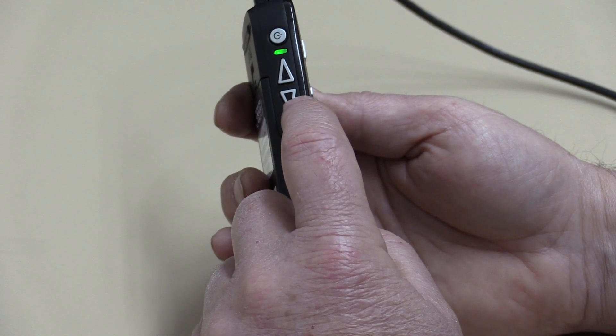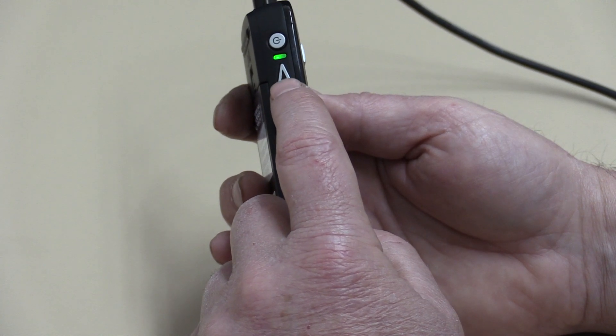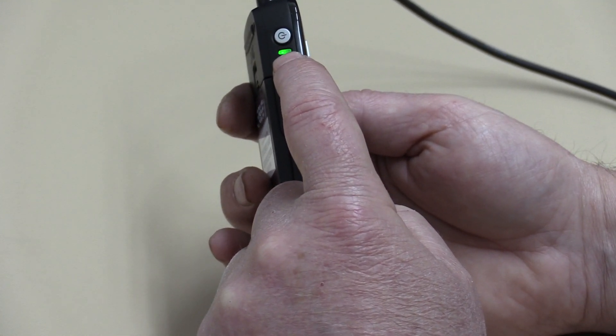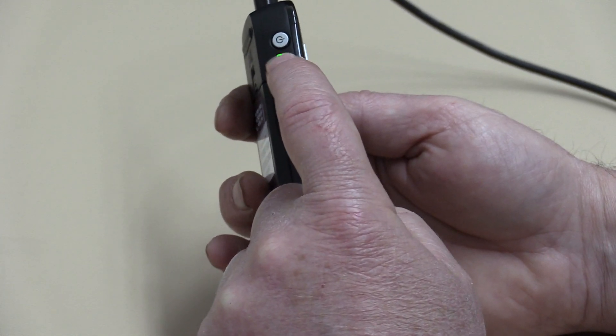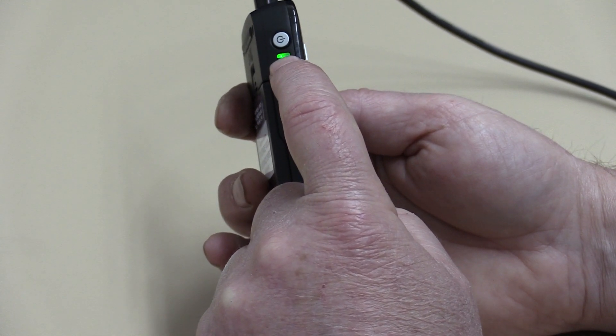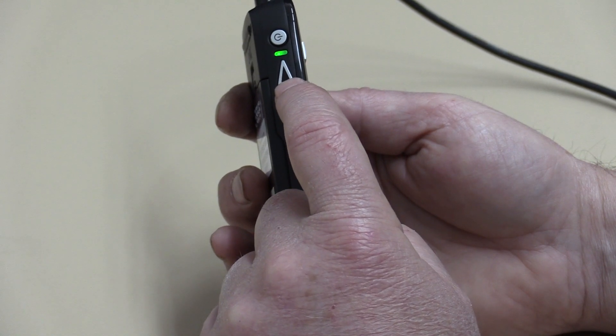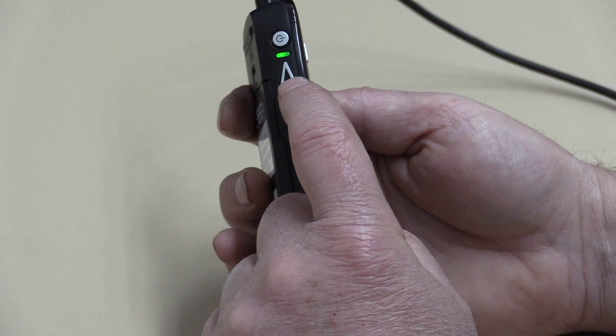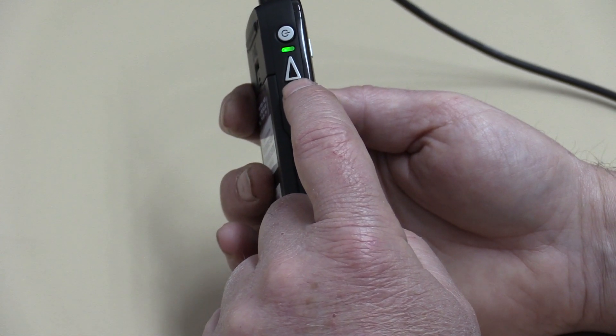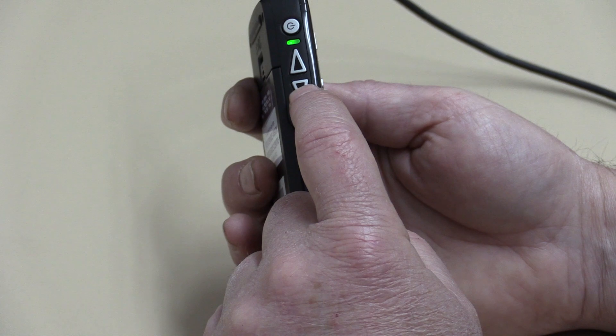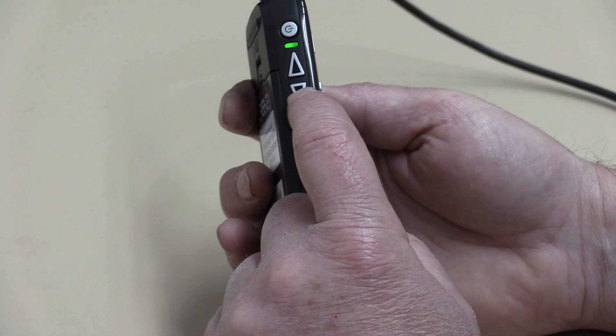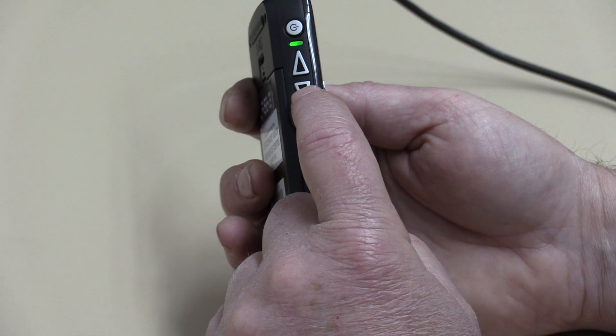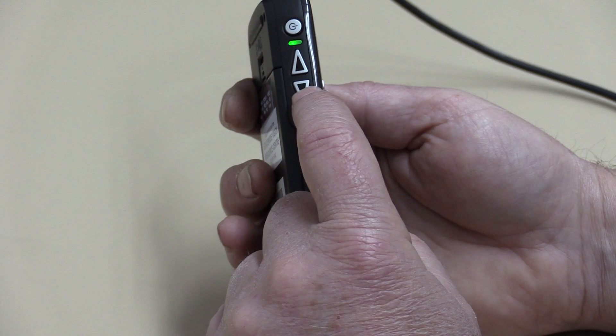You can actually decrease the speed, so you can slow things down, or by pushing the up arrow you can increase the speed right up to ten. Ten is very quick. I think it's about two and a half times the regular speed. So that's how you can adjust the speed, and that will adjust the speed on audio books as well as text or electronic books as well.